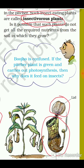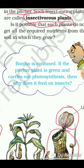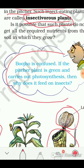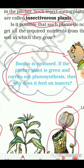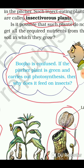Bujo is confused — if the pitcher plant is green and carries out photosynthesis, why does it feed on insects? Please note down this answer: although the pitcher plant is green and can carry out photosynthesis, it feeds on insects because of the deficiency of nitrogen in the soil where the pitcher plant grows.